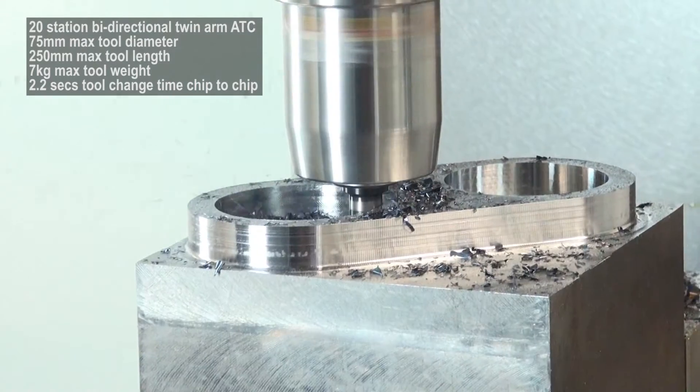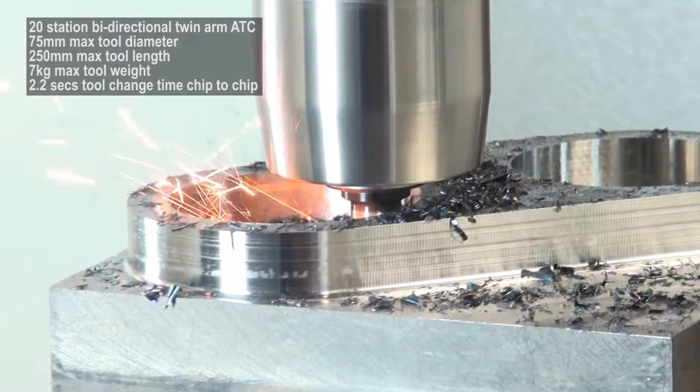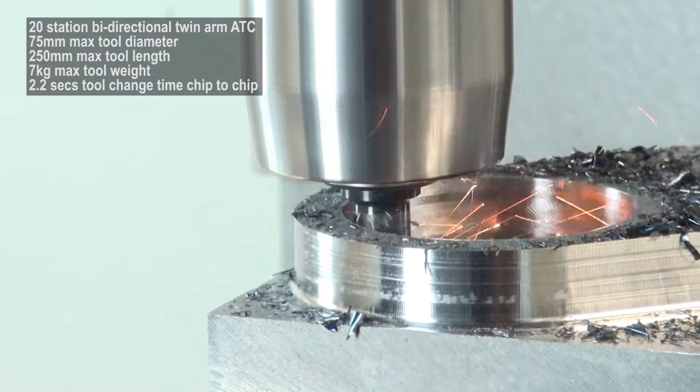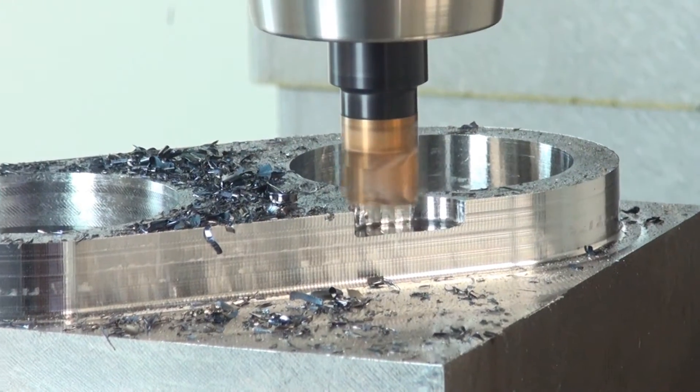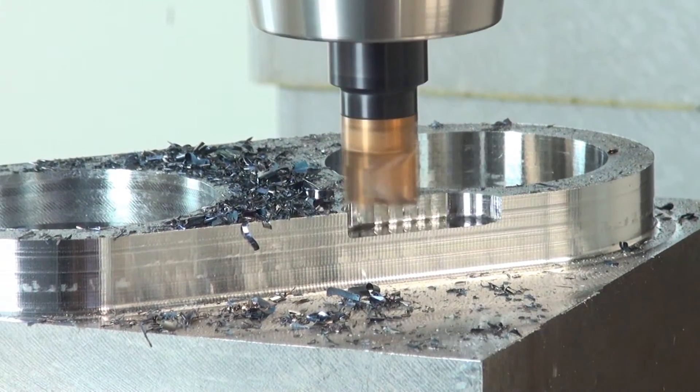Rapids are also better with X and Y at 36m a minute and Z at 30m a minute. Tool capacity has been increased, now offering a 20-station bi-directional twin-arm ATC.